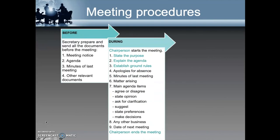During the meeting, it is the duty of the chairperson to start the meeting by stating the purpose, explaining the agenda, and establishing ground rules. You will notice that the chairperson's role is highlighted in green font. This will then be followed by the apologies for absence in case someone could not attend the meeting, a discussion of the minutes of the last meeting, and matters arising from the previous meeting. Then the meeting will move on to the main agenda items, which is the most important part of the meeting and will typically involve active participation from all meeting participants.